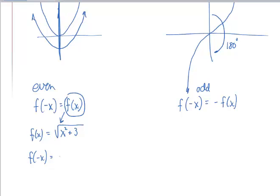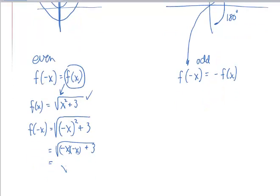I'm going to plug negative x into the function, square it, add 3 to it, and then square root it, and see if that equals what I had originally. And when I do the algebra, negative x times negative x equals positive x squared, which shows me that I have x squared plus 3 under the radical. This is identical to what I started with with f of x, therefore the function is even.